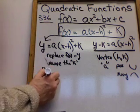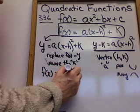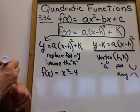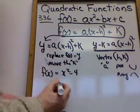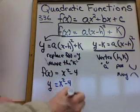Suppose you have this one: f of x equals x squared minus 4. So what's the first thing you're going to do? Replace the f of x with y. So y equals x squared minus 4.